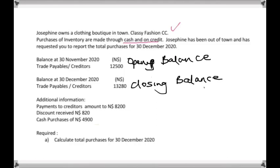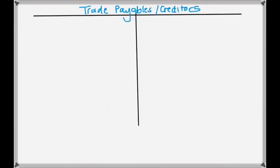From the additional information: payments to creditors amount to 8,200 — this is money paid off to the bank. Discount received is 820, meaning our suppliers gave us a discount off payments we made. Cash purchases amount to 4,900. They ask us to calculate the total purchases for 30 December 2020, and the easiest way is by drawing up a T-account for trade payables and creditors.